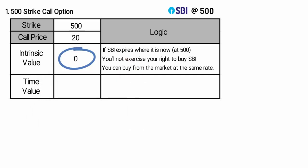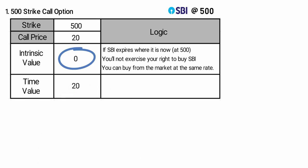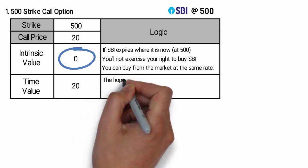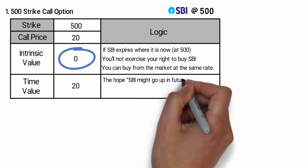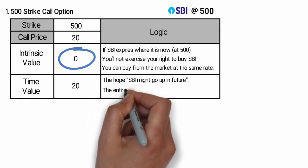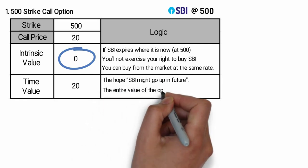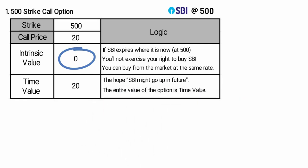Here the time value is 20 rupees. All the possibilities of making money in this option lie in the hope that SBI might go up in future. That's why the entire value of the option is time value.